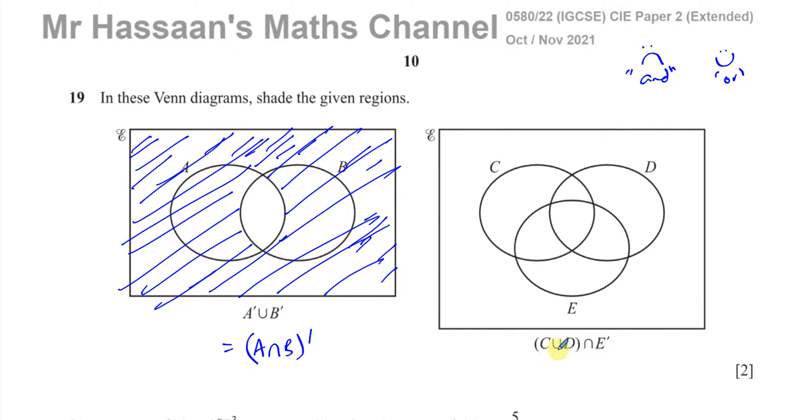Then we have C union D intersection E complement. So basically, our basic part that we have is C union D. So I'm going to shade all of this first. I'll shade all of C union D. And this is why it's important to do things in pencil. So I've shaded C union D.